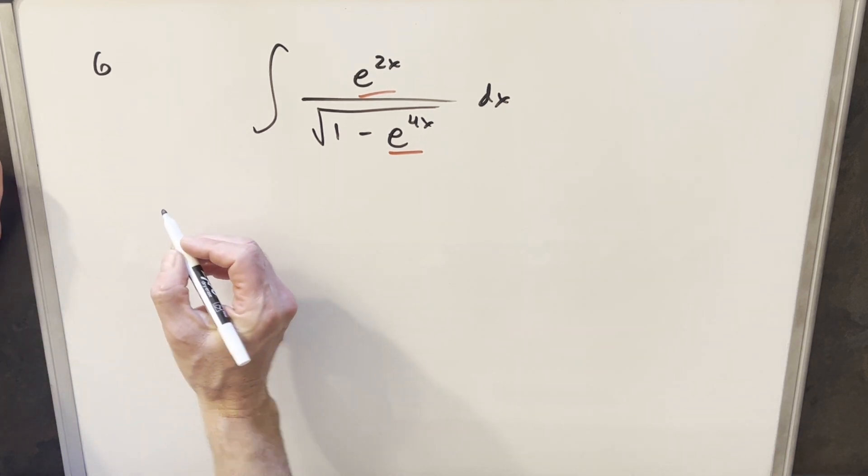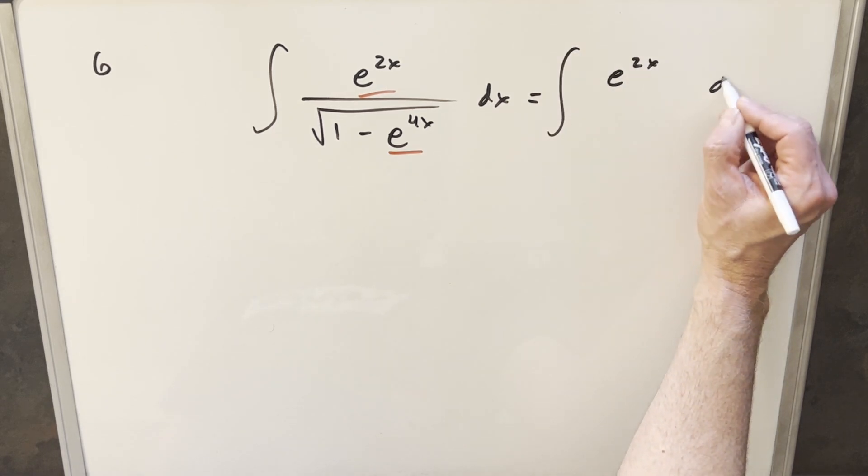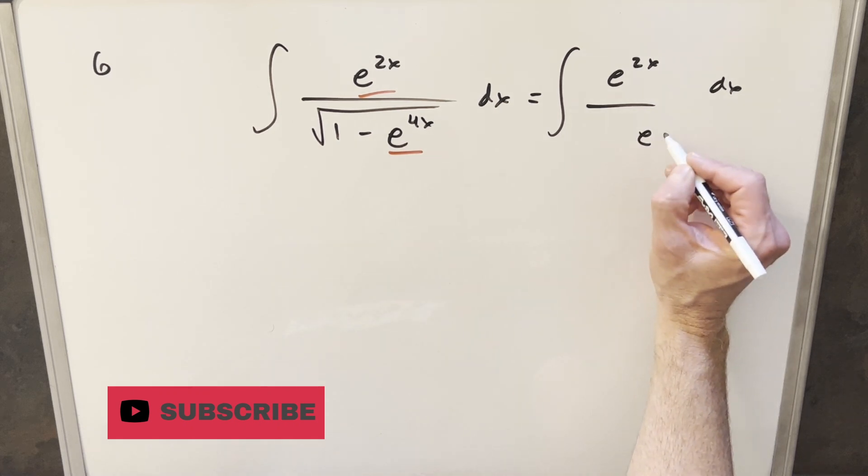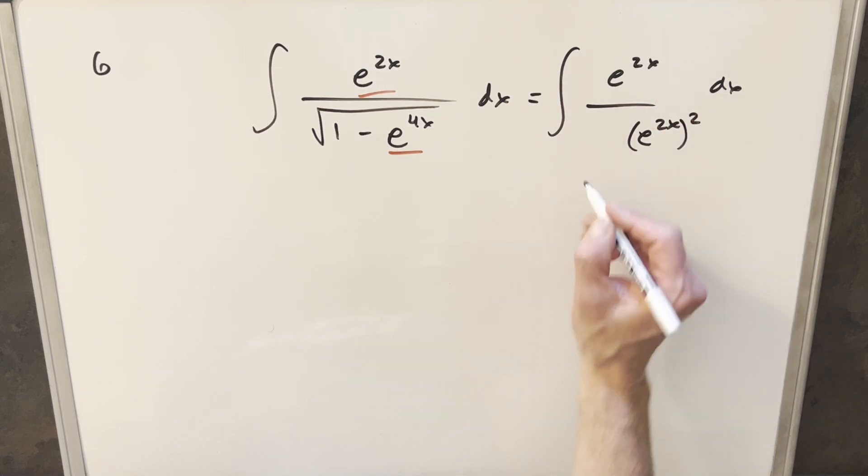And what I'm going to do is, I think to start what I'll do is rewrite this just to kind of show what's going on. So now this e to the 4x, what I can do is rewrite this as e to the 2x squared, just noticing the similarity between what we have in the numerator.